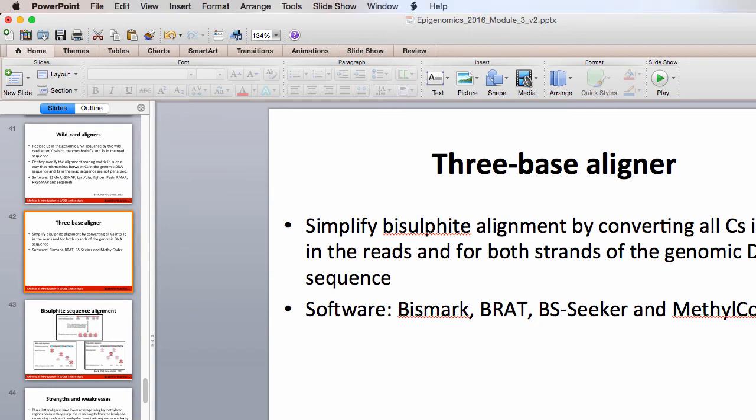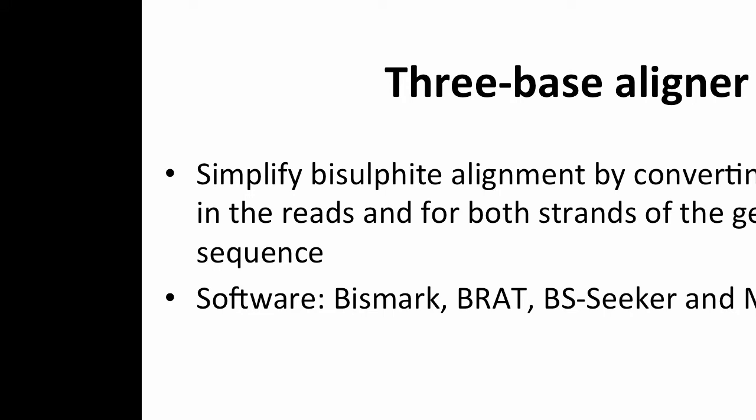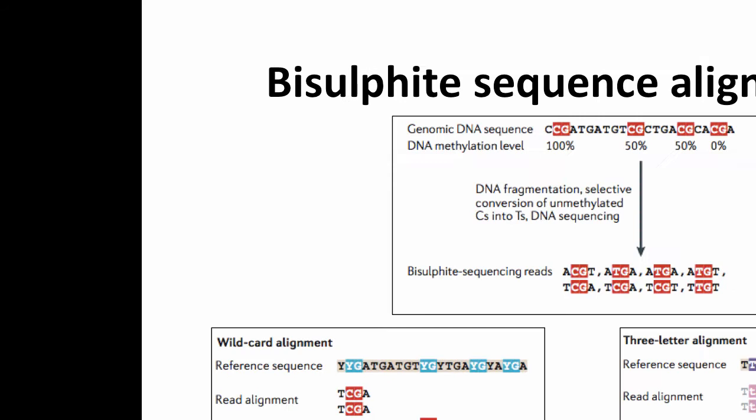The other strategy is three-base aligners, where you convert all the C's into T's in the reads on both strands of the genomic DNA sequence. Software tools that use this strategy include Bismark and BRAT. Using an example hopefully will help here. At the top we have the overall example: a CG that's 100% methylated, a CG that's 50% methylated, and a CG that's unmethylated.